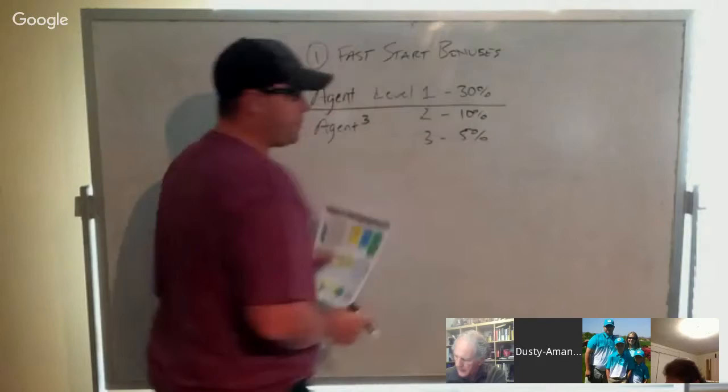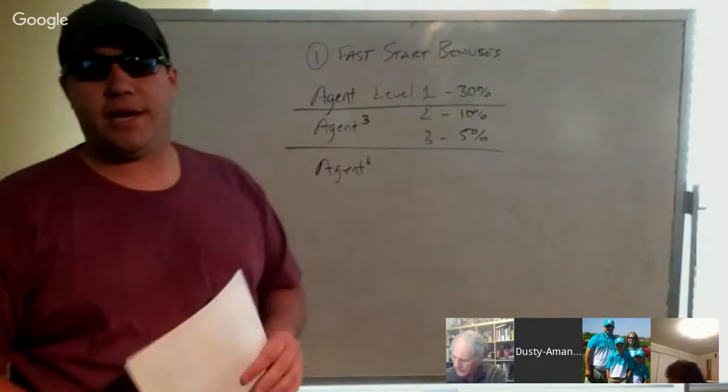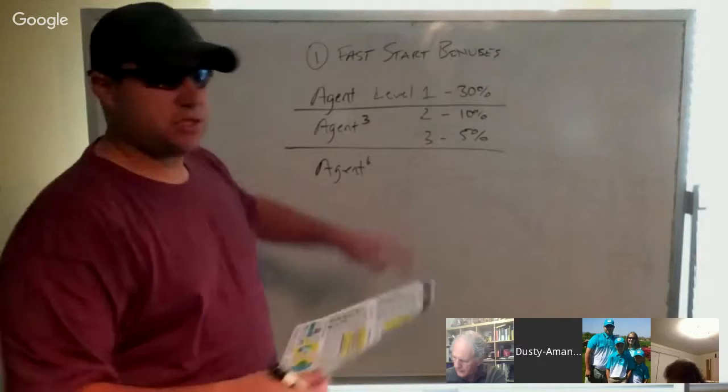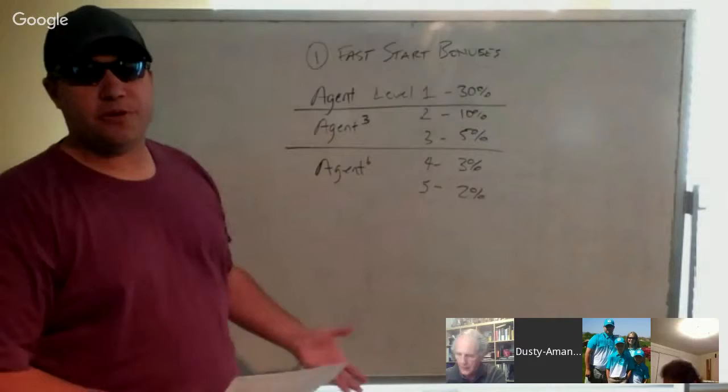5% on the third level. At agent six, you can literally max out our comp plan. All you need is six personally enrolled to max out the whole comp plan. So agent six is just six personals. That opens up the fourth and the fifth levels at 3% fast start overrides and 2% fast start overrides.